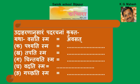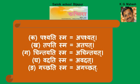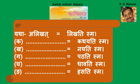The dhatu names: Vasati - Vas dhatu, Pashyati - Drush dhatu, Tapati - Tap dhatu, Cintayati - Cinta dhatu, Vadati - Vad dhatu, Gacchati - Gam dhatu. Answers: Pashyati sma = Apashyat, Tapati sma = Atapat, Cintayati sma = Acintayat, Vadati sma = Avadat, Gacchati sma = Agacchat.